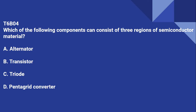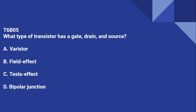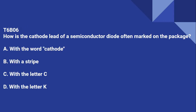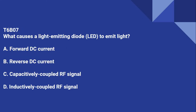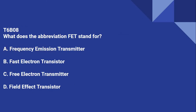T6B04: Which of the following components can consist of three regions of semiconductor material? That is a transistor. T6B05: What type of transistor has a gate, drain, and source? That is a field effect transistor. T6B06: How is the cathode lead of a semiconductor diode often marked on the package? With a stripe. T6B07: What causes a light-emitting diode (LED) to emit light? Forward DC current. T6B08: What does the abbreviation FET stand for? That is a field effect transistor.